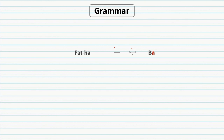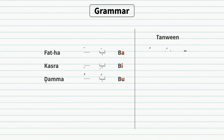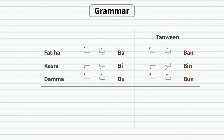Fatha adds an 'a' sound to the letter it is added to — for example, 'ba' becomes 'ba'. Kasra adds an 'e' sound — for example, 'bi'. Damma adds an 'oo' sound — for example, 'bu'. When fatha, kasra, and damma are doubled, they are called tanween — for example, 'ban', 'bin', 'bun'. Shadda doubles the letter — for example, 'bb'.